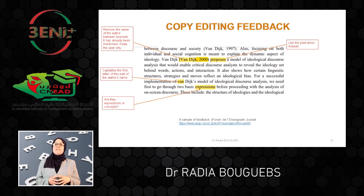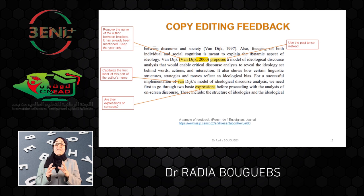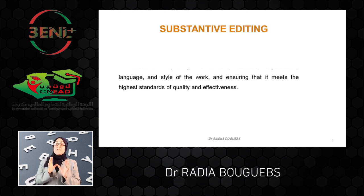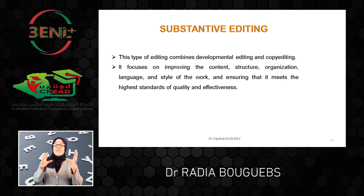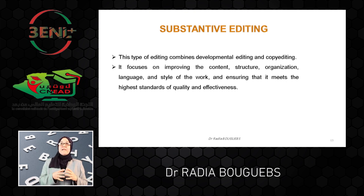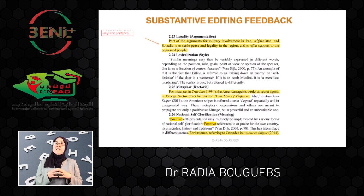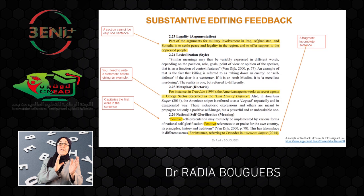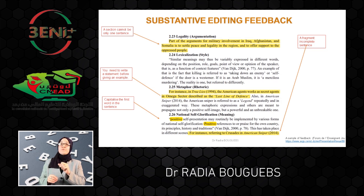The third type of editing is substantive editing. This type combines the two previous types — developmental editing and copy editing — in that the substantive editor may focus on improving both the content, structure, organization, language, and style of the work, ensuring that the paper meets the highest standards of quality and effectiveness. An example of substantive editing feedback shows that the editor's focus is both on developmental editing concerning content and development, and also on grammar and the like.